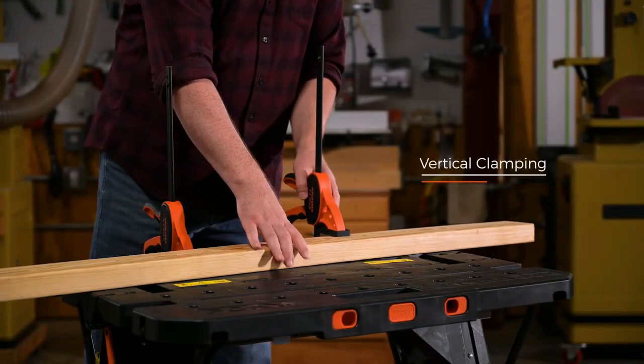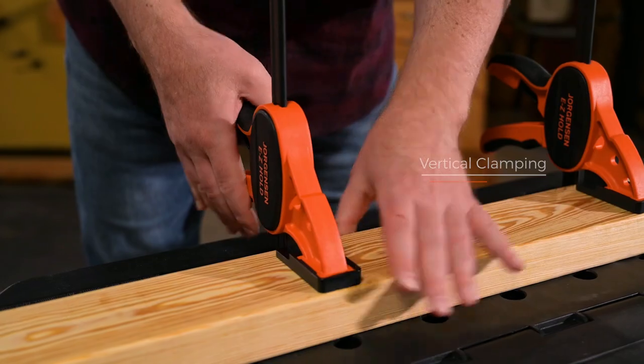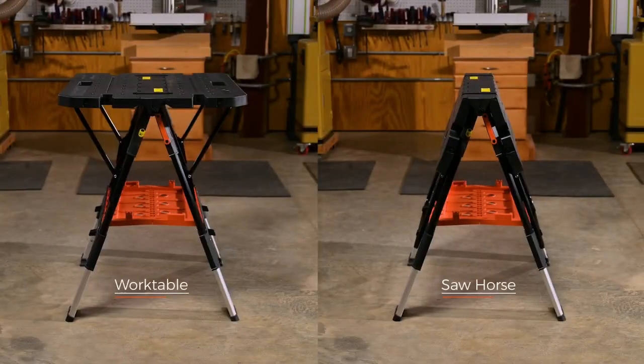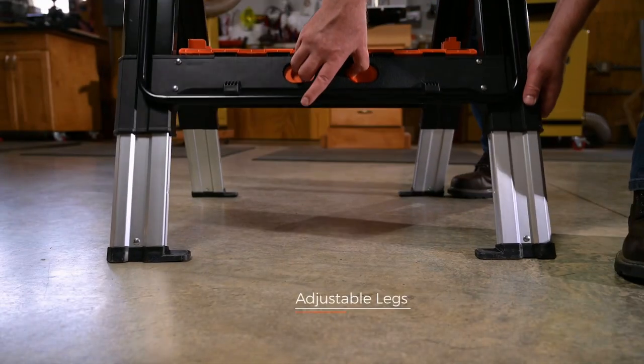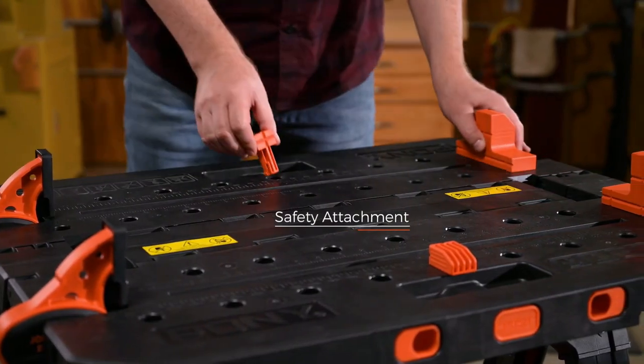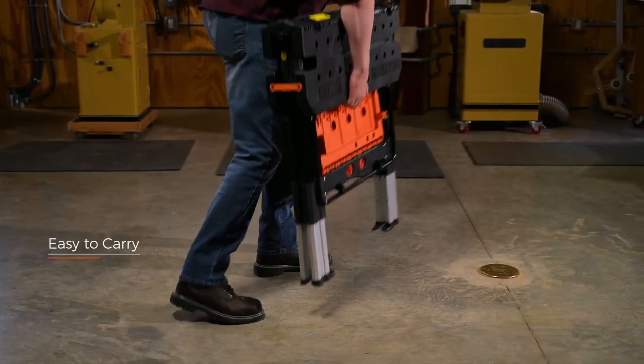The convenient 2 in 1 Worktable and Sawhorse makes for quick and easy conversion for tackling more projects. The bar clamps can fasten directly to the Worktable and Sawhorse, as well as hold items vertically or horizontally for greater flexibility while you work.